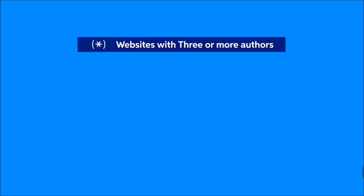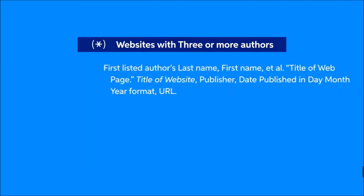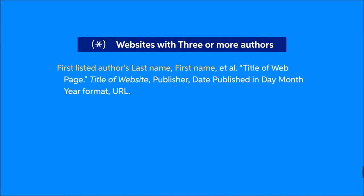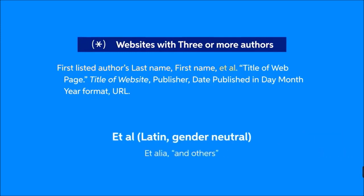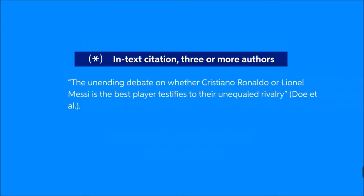For a source with three or more authors, the first name is listed in reverse order and is followed by a comma and et al. The in-text citation for a website with three or more authors should contain only the first author's last name, followed by et al.